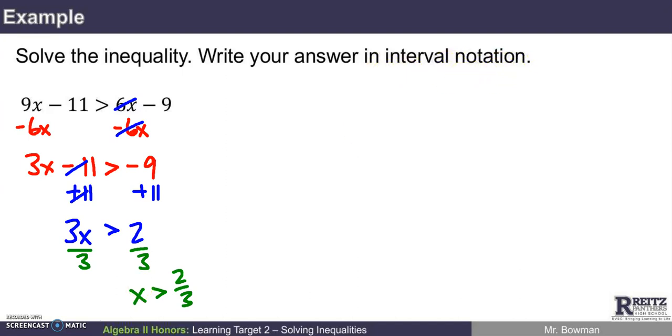So if you recall from the previous screencast, the way I need to say an answer for x is greater than 2 thirds is to say, well, I need an interval that starts at 2 thirds and approaches positive infinity. And since it doesn't include 2 thirds, I need the round bracket here. Infinity, as you saw previously, always gets the round bracket. So an answer like 2 thirds to positive infinity.